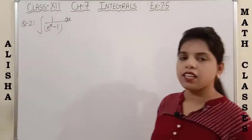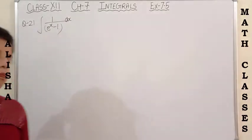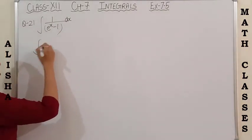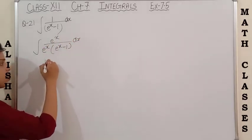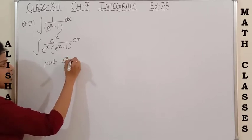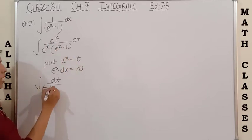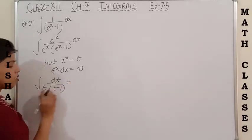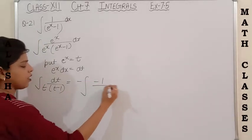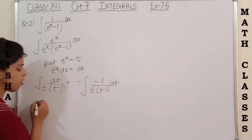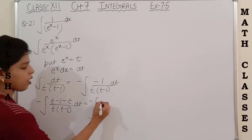Question number 21 is the integration of 1/(eˣ−1). There is only one factor in the denominator so we can't directly do partial fractions. Instead, multiply and divide by eˣ, since the derivative of eˣ is eˣ. Now put eˣ = t, so eˣ dx = dt. The integral becomes dt/(t(t−1)). This is the same integral as in question 20! Taking negative outside and inside, then adding and subtracting t in the numerator.